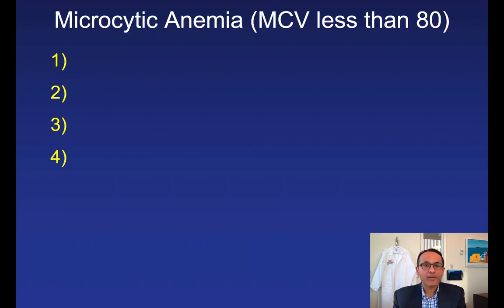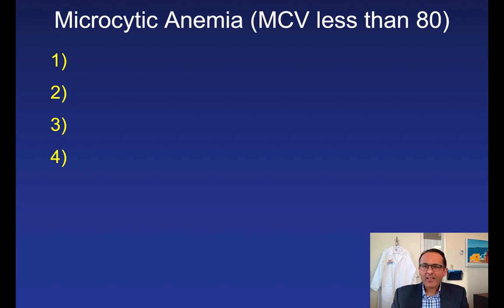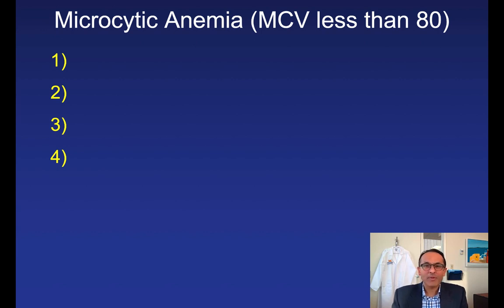So let's first focus on microcytic anemia — MCV less than 80. For all of these I'm assuming that the RDW is normal, which means there isn't much variability. If the RDW is elevated, that tells you there may be populations of cells that are large and some that are small, so the actual MCV could be normal but we could be missing both microcytic as well as macrocytic anemia.